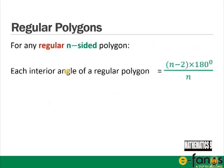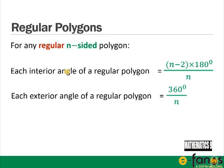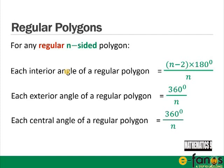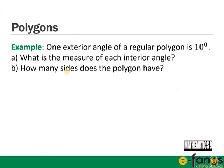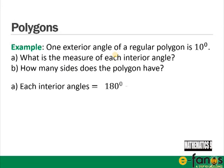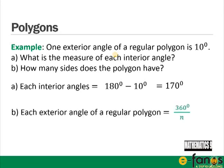For any regular n-sided polygon: each interior angle is (n − 2) × 180 / n, and each exterior angle is 360 / n. Example: if each central angle is 10 degrees, the exterior angle is 10°, so the interior angle is 180 − 10 = 170 degrees. Since 360 / n = 10, n = 36, so the polygon has 36 sides.